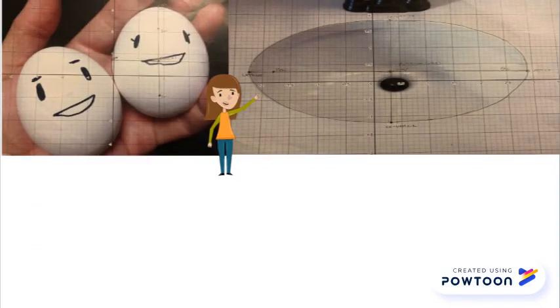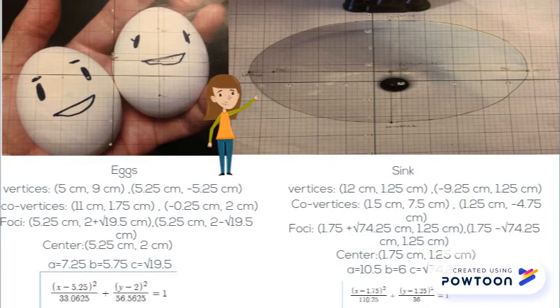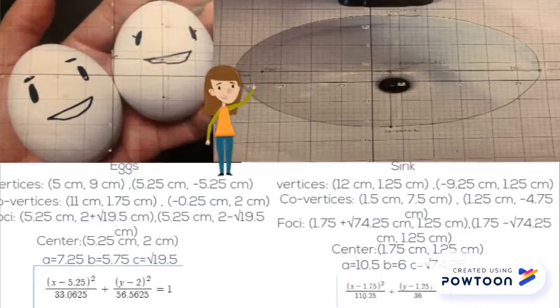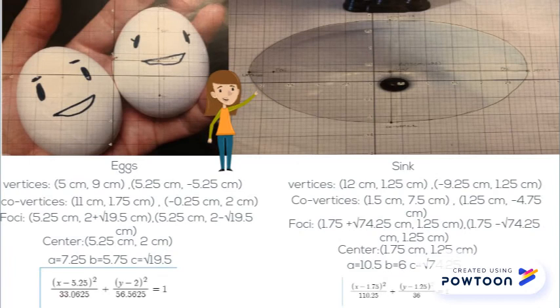To find my equations for my real life ellipses, I first measured out to find the center of my ellipse, and then I took that information to find my vertices and co-vertices. I then used that information to find a, b, and c, a being the distance from the center, b being the distance from the co-vertices, and c the distance from the foci.